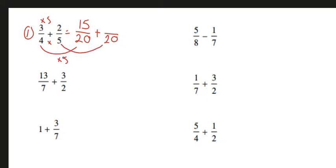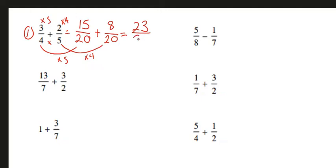How do we get from 5 to 20? Times 4. And what we do to the bottom, we also need to do to the top. 2 times 4 is 8, and 2 over 5 becomes 8 over 20. Now that we have the same denominator, we can add the two numerators together. 15 plus 8 will be 23 over 20.